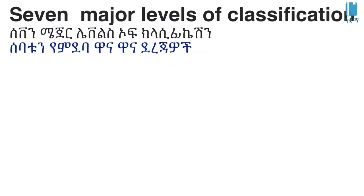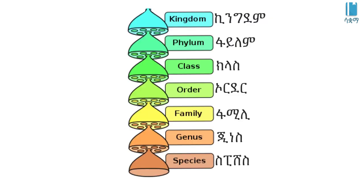The seven major levels of hierarchical classification are: kingdom, phylum, class, order, family, genus, and species.